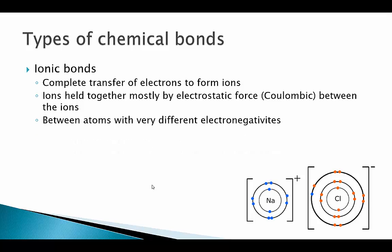Ionic bonds happen between atoms with very different electronegativities. Sodium doesn't hold very tightly to its valence electron, whereas chlorine holds very tightly to any electron in its valence shell. An electron in the valence shell of chlorine will be stabilized relative to the valence shell of sodium, which is why it tends to move there — and we need a big difference in electronegativities to facilitate that. Again, electrons are now localized on the ions; unlike the electron sea model where valence electrons wander freely, this electron has gone to the chlorine and stays there.